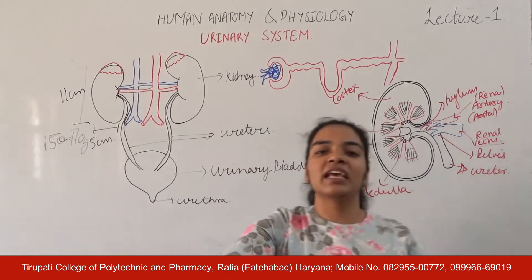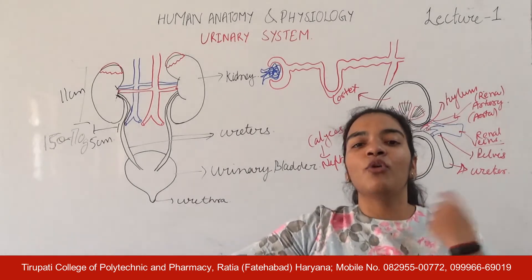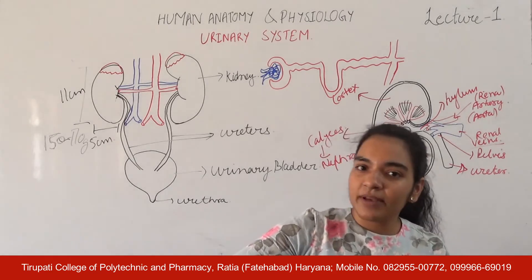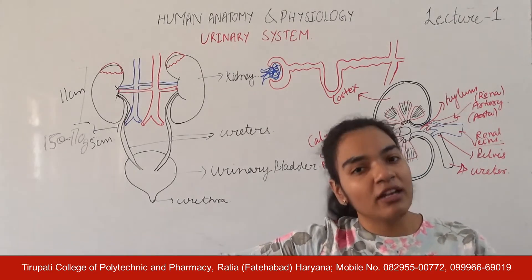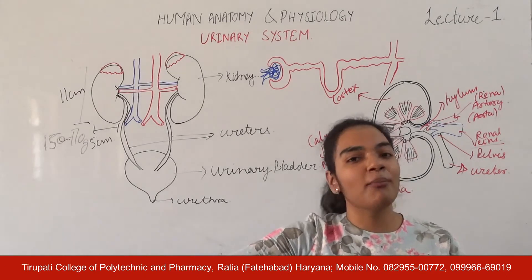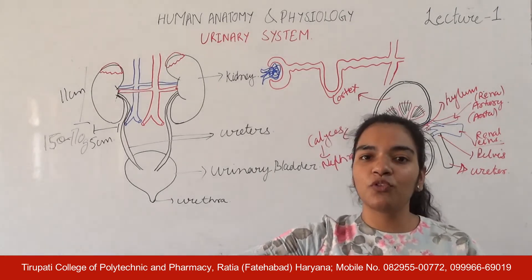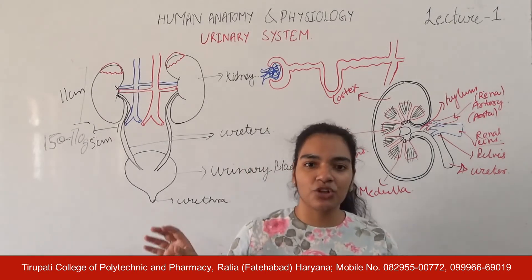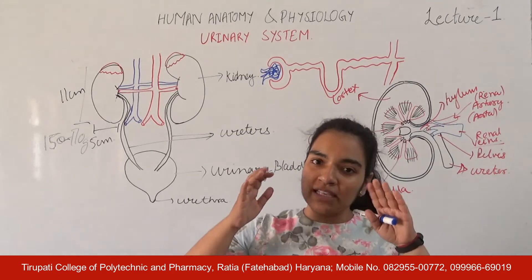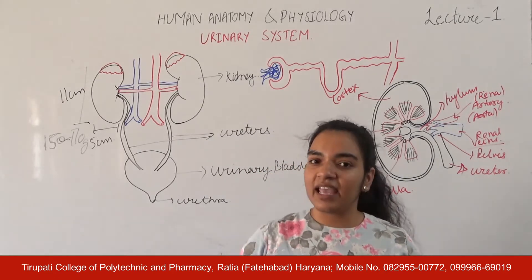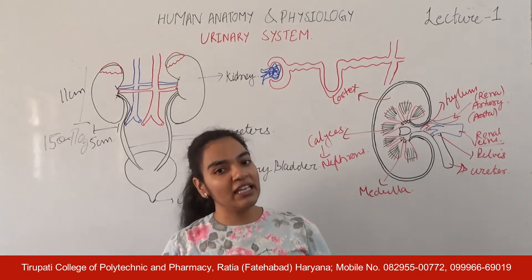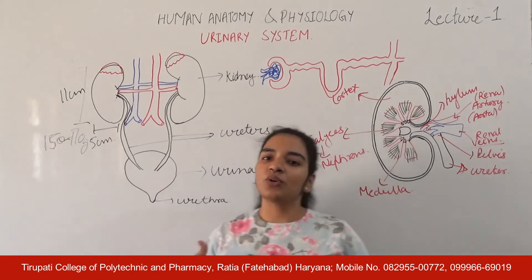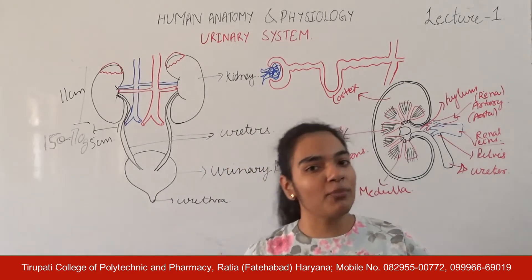In our body, waste products are removed through vapors, respiration, and lungs. Second, we have water or liquid removed in the form of sweat. Then we have fecal matter in the form of excretion. And above all that, we have one of the major waste products in our body: urine. Our urinary system is responsible for the formation of urine.